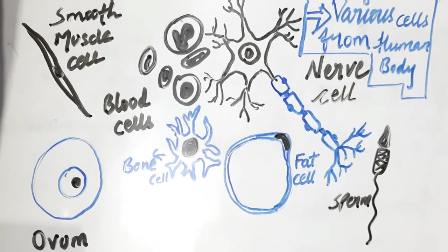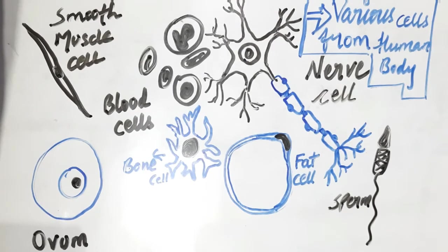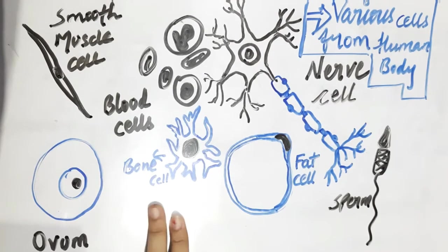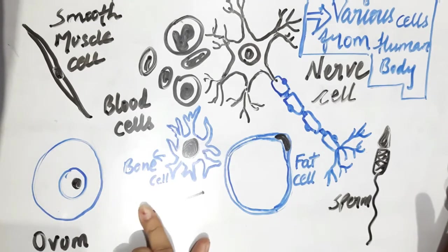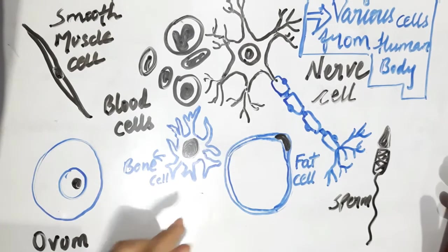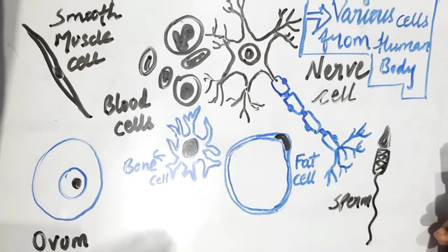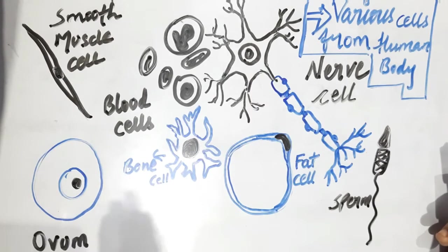Hello children, welcome to our channel. As you all know, we started the chapter on cells, and we have completed two videos. If you have not watched those two videos, please go through the playlist. Today I am going to show you various cells from our human body. I have made different types of cells of our human body, and I have explained multicellular and unicellular organisms.